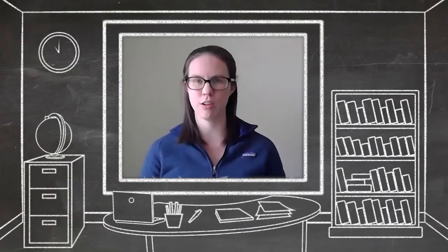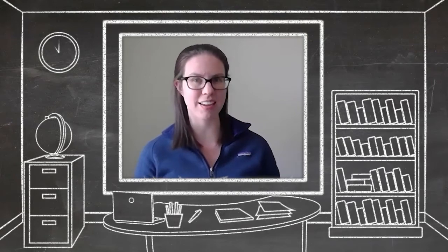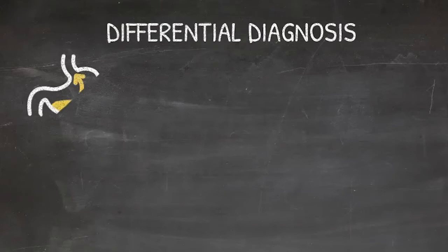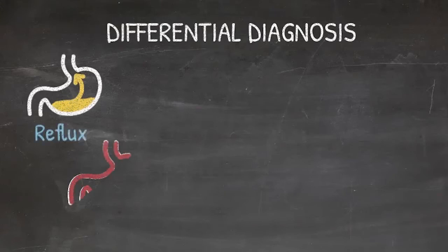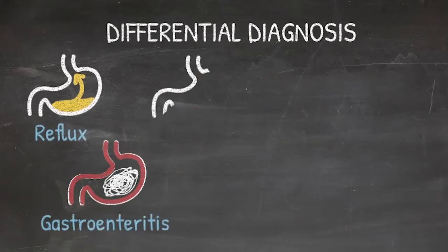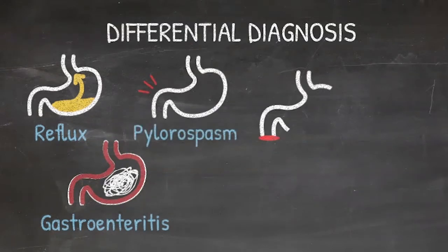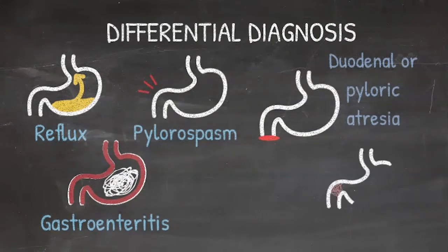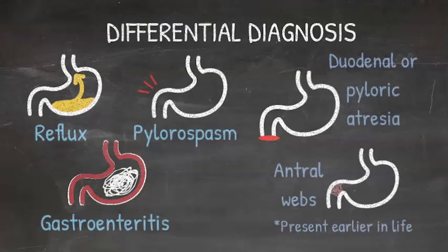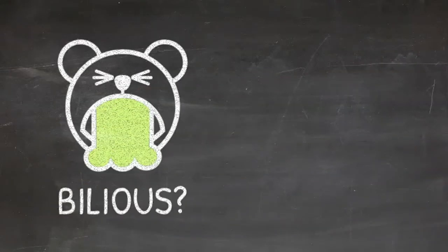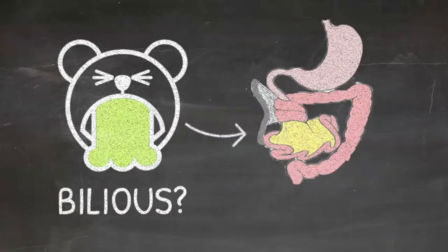What are other differential diagnoses for non-bilious vomiting in an infant? Our differential diagnosis should include gastroesophageal reflux, gastroenteritis, pylorospasm, and other anatomical abnormalities such as duodenal or antral webs, pyloric atresia, but these tend to present very early after feeding. Bilious emesis should always be worked up to rule out intestinal malrotation with midgut volvulus.